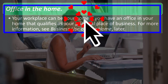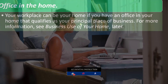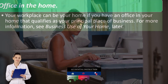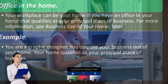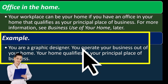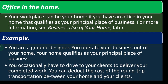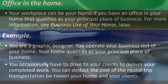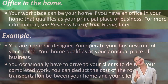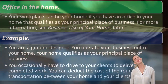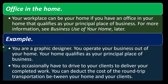Commuting expenses are personal and not deductible. However, your workplace can be your home if you have an office in your home that qualifies as your principal place of business — see 'business use of your home' for more information. For example, if you are a graphic designer who operates your business out of your home and your home qualifies as your principal place of business, you can deduct the cost of round-trip transportation between your home and your clients, because your home is your office.